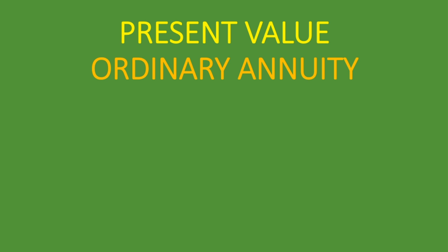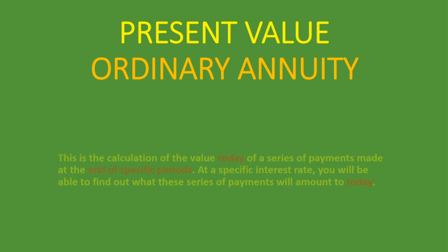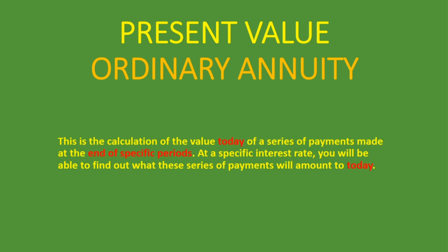What is the present value? This is the calculation of the value today of a series of payments made at the end of a specific period — hence, ordinary annuity. So it's the present value of an ordinary annuity. At a specific interest rate, you will be able to find out what this series of payments will amount to today. We'll go through a few examples to show you how to calculate them.